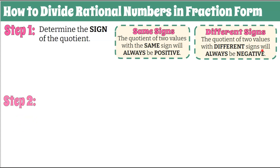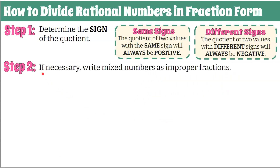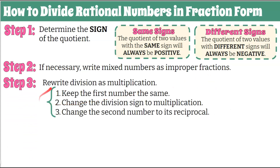Step two: if necessary, write any mixed numbers as improper fractions. Step three: we're going to follow a three-step process to rewrite division as multiplication. We're going to keep the first number the same, change the division sign to multiplication, and change the second number to its reciprocal — flipping the numerator and denominator, keeping the sign.